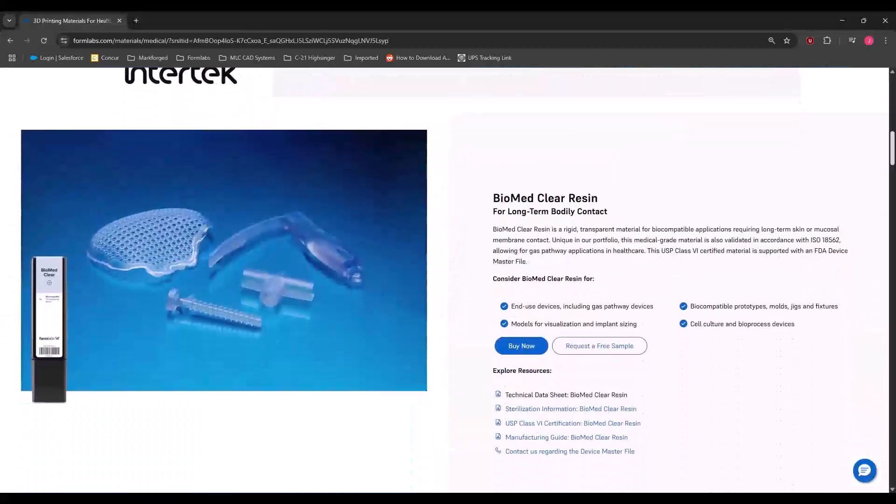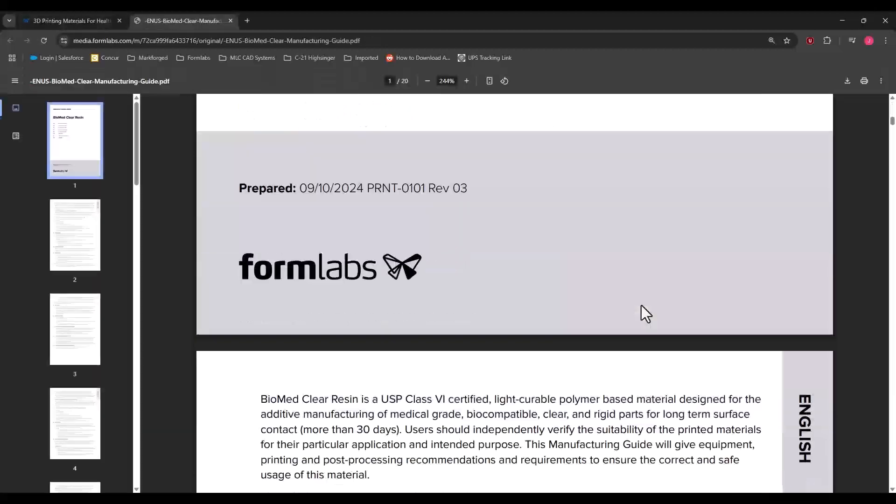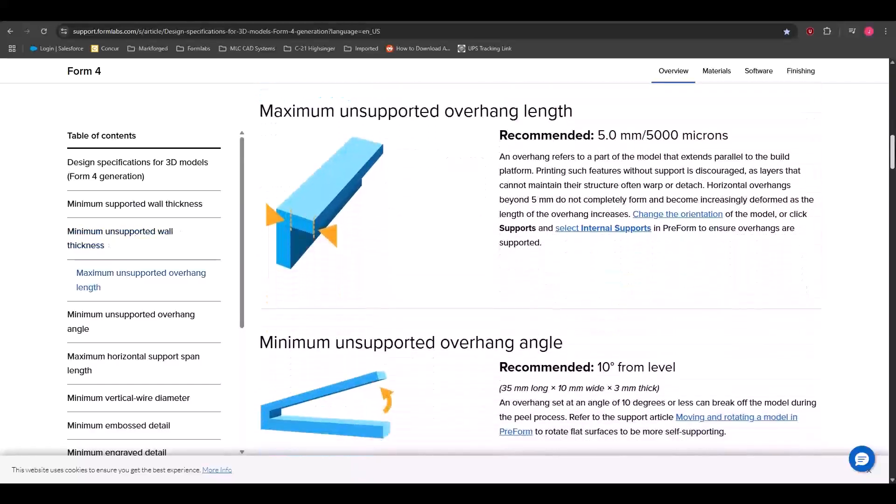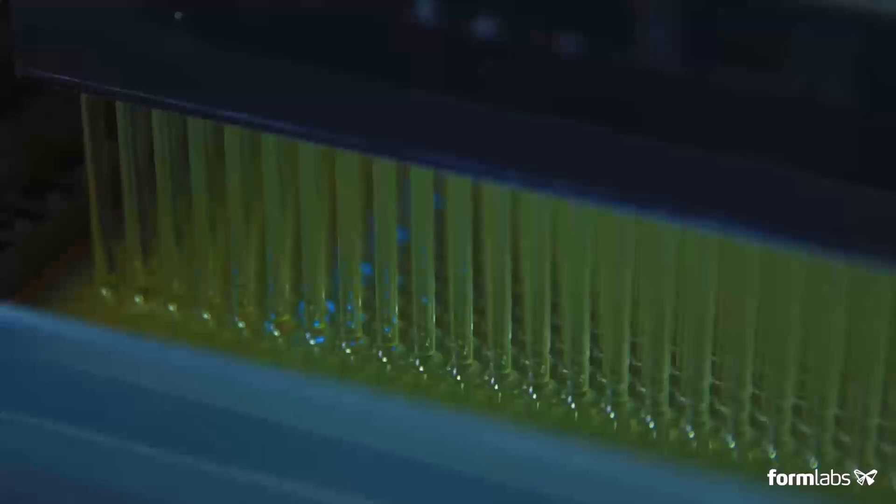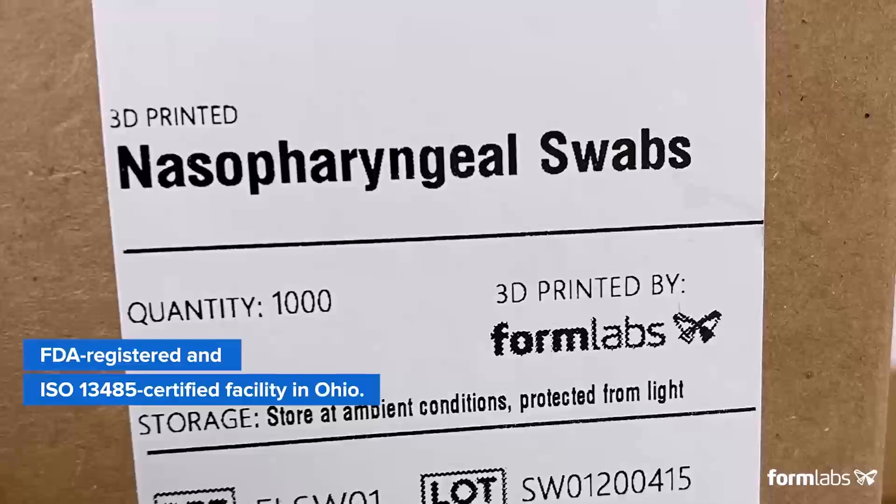Formlabs has manufacturing guides for each Biomed resin that go through every stage of the resin printing process. Like we saw with Markforged, separate consumables need to be used by those with B-series printers that print both Biomed and Non-Biomed resins. This includes things like a dedicated build plate and wash station to maintain biocompatibility. Now, as long as the design guide and manufacturing guide are being followed, the 3D printed part poses a low risk of harm to the patient.